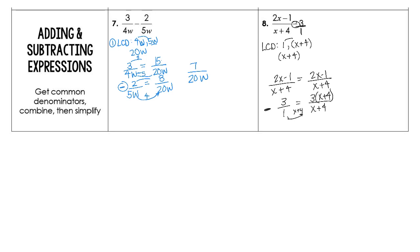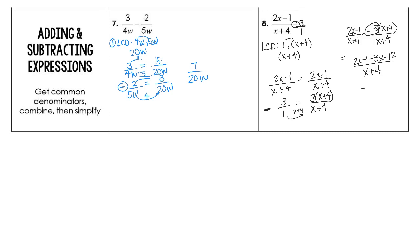So I take 3 and multiply that by x plus 4. So I have 2x minus 1 over x plus 4, minus 3 times x plus 4 over x plus 4. We already have a common denominator now. From the first fraction, I have 2x minus 1. Distribute the negative 3: minus 3x minus 12. Collect like terms: negative x minus 13, all over x plus 4. This is our final answer.